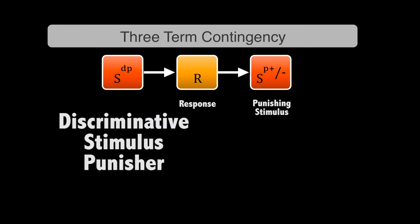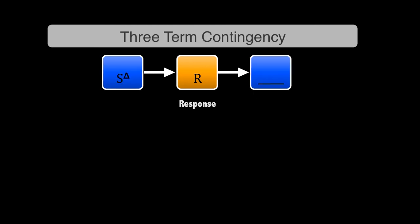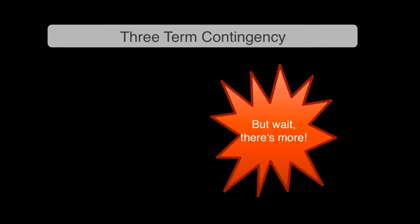You can also have an SDP, a discriminative stimulus that signals that punishment is coming. You could also have this cool thing called an S-delta, which basically signals that extinction is going to happen—in other words, there are no reinforcers available. That's what an S-delta signals. S-delta signals no reinforcer, SDP signals that there's a punisher coming, SD signals that there's reinforcement available.